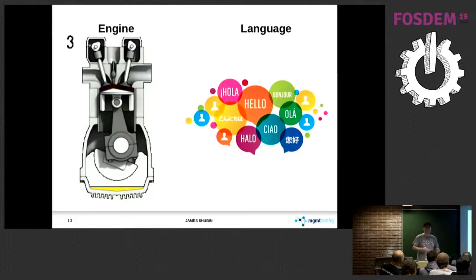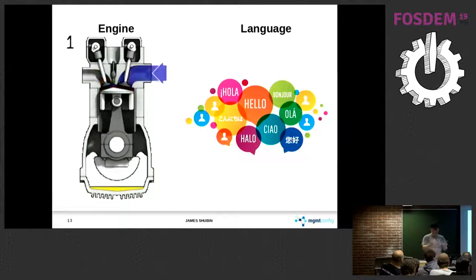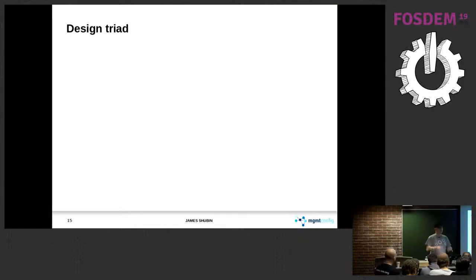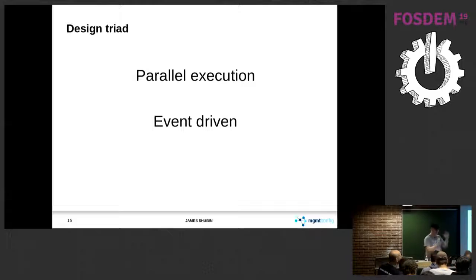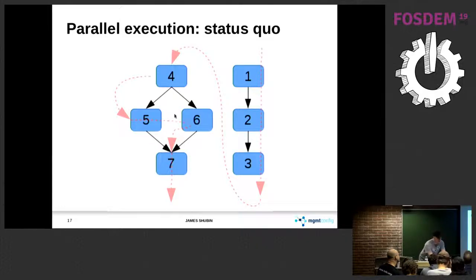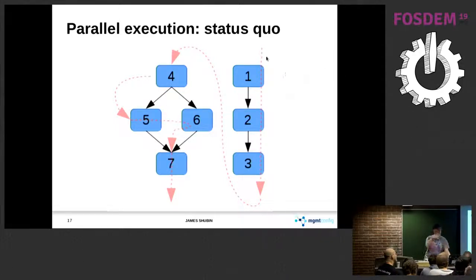The engine is basically what actually does the work. The engine has three main design points: the graph of resources runs in parallel, they're event-driven, and it works as a distributed system. We have these DAGs — these resource graphs — where each blue block is work we want done, and the black arrows represent the dependency between each thing. There's a red line showing a topological sort, where we decide to do this, then that, and so on.